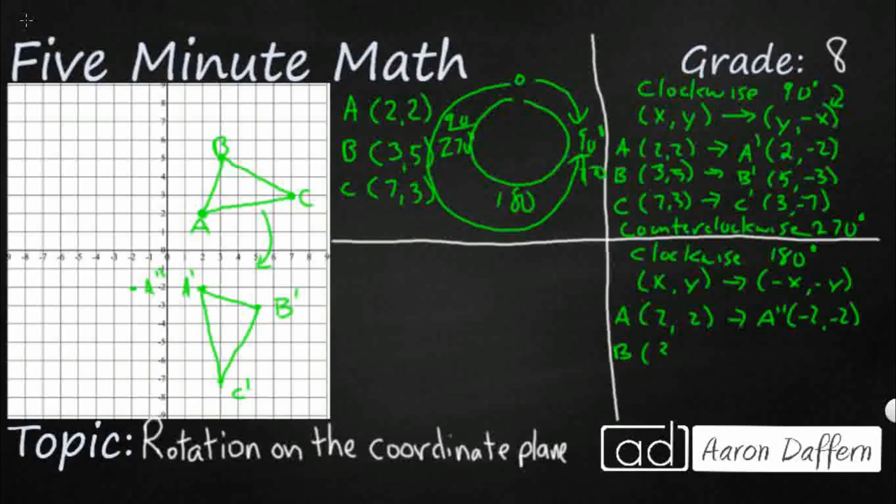And then B, 3, 5 is going to become B double prime, negative 3, negative 5. So negative 3, negative 5 is right there. That's going to be my B double prime. And then C, 7, 3 is going to become C double prime, negative 7, negative 3. So negative 7, negative 3. And there's my C double prime.